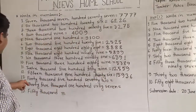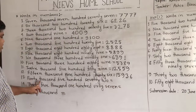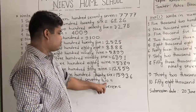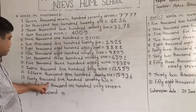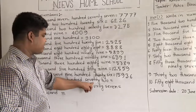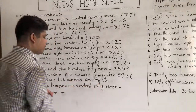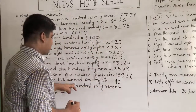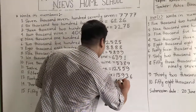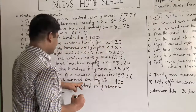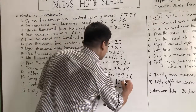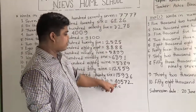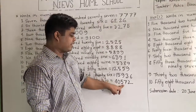Our 13th number is 40,572. So first we write 40 as 40,000. Next 500, so we write 5. Then 72, so we write 72. It is read as 40,572.